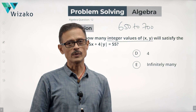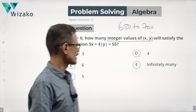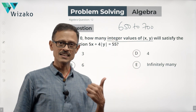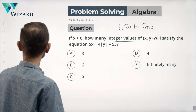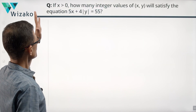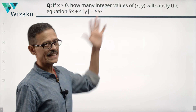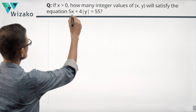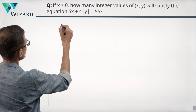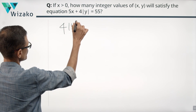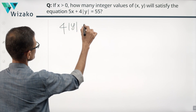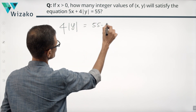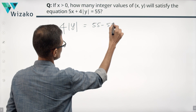We'll list the possible values of x and y, count them, and come up with one of the answer options. I'm going to start by rewriting this equation: I'm going to keep 4 modulus of y on the left-hand side — so 4 modulus of y is equal to 55 minus 5x.